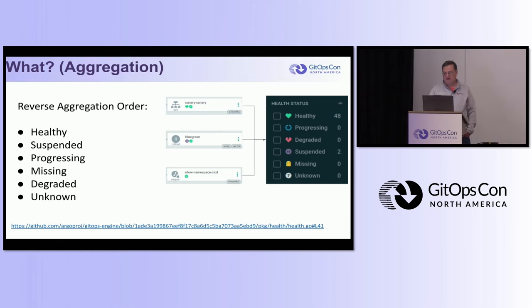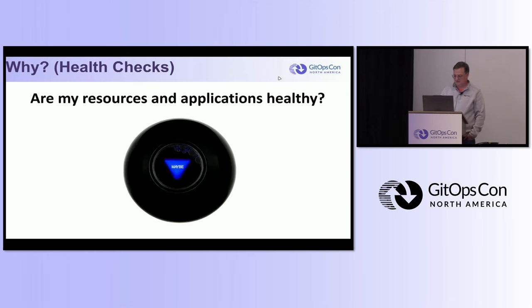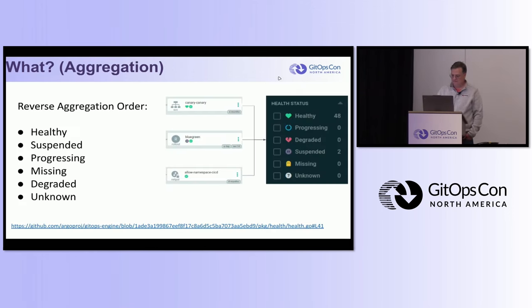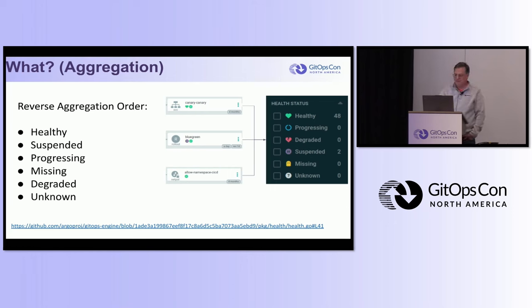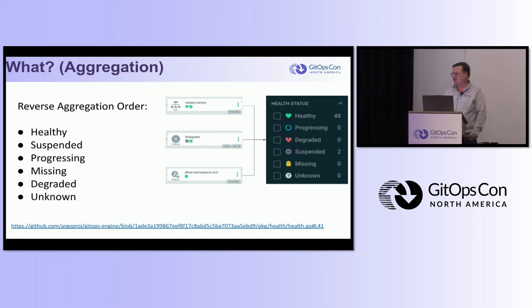If you look here on the right, you can see the canary one has a heart, which indicates it's healthy. The blue-green has a little pause symbol, indicating it's suspended. And the last one, the network policy, has no symbol at all - meaning there's no health check defined for it.